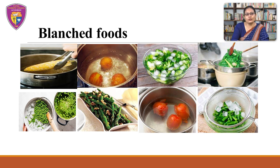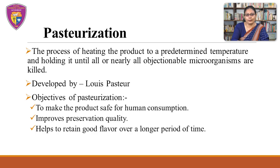Let us find out which types of foods are subjected to blanching. As you can see, blanching is used in foods like tomato, spinach, beans, carrots, peas, asparagus, broccoli, corn, apple and pear.